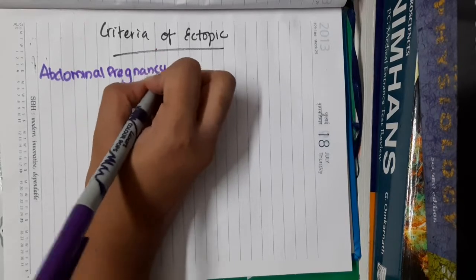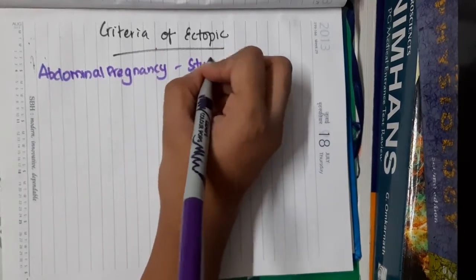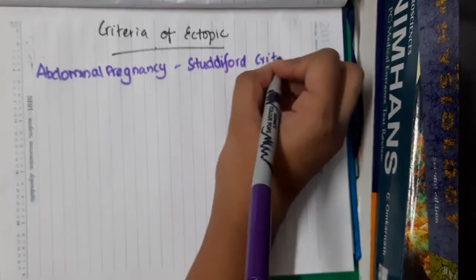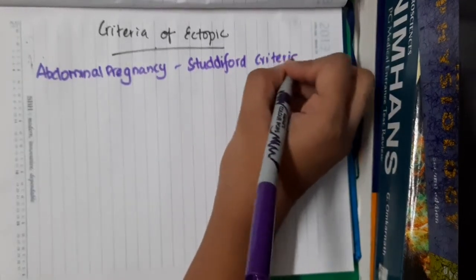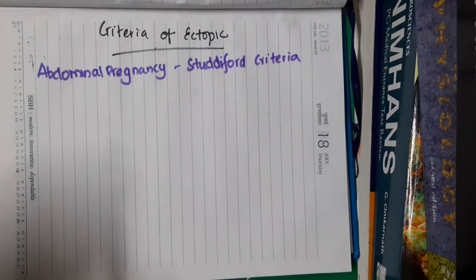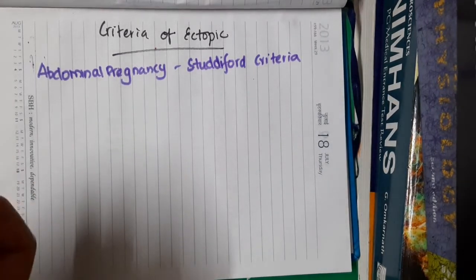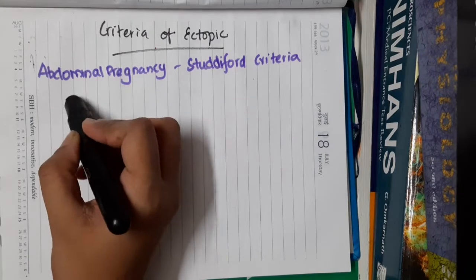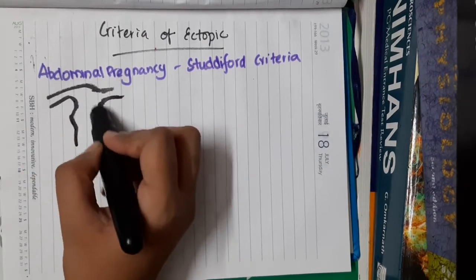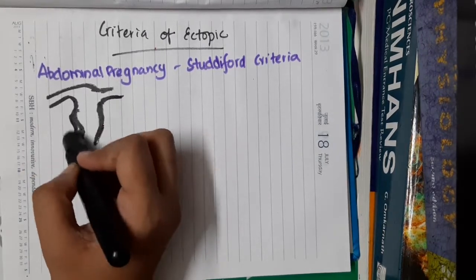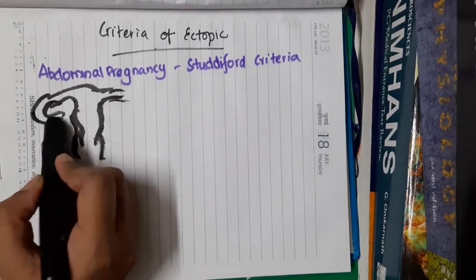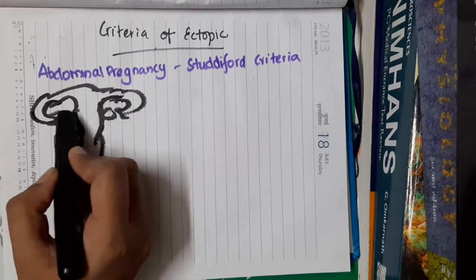For abdominal pregnancy, we have a criteria called Studdiford's criteria. I will draw small diagrams to make it easier to understand. So this is the uterus and the ovaries.